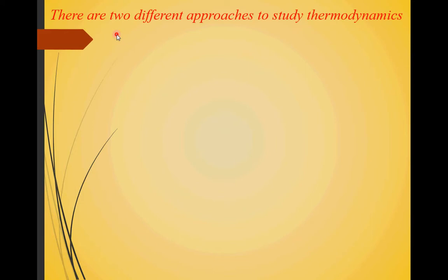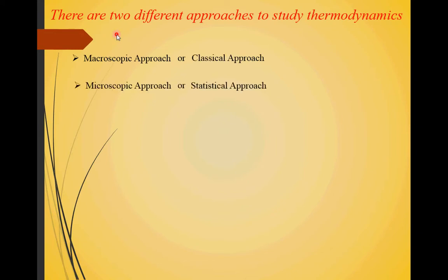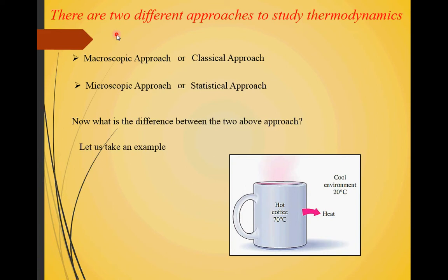Now there are different approaches to study thermodynamics — basically two approaches. The first is called the macroscopic approach or classical approach, and the second is called the microscopic approach or statistical approach. To understand the difference, consider a hot cup of coffee maintained at 70 degrees Celsius while the environment is at a lower temperature, say 20 degrees Celsius. We know that heat flows from a high temperature region to a lower temperature region.